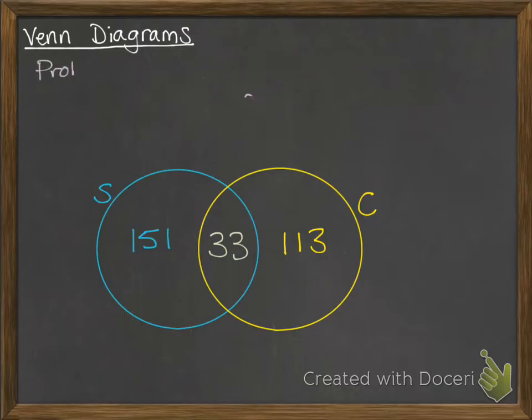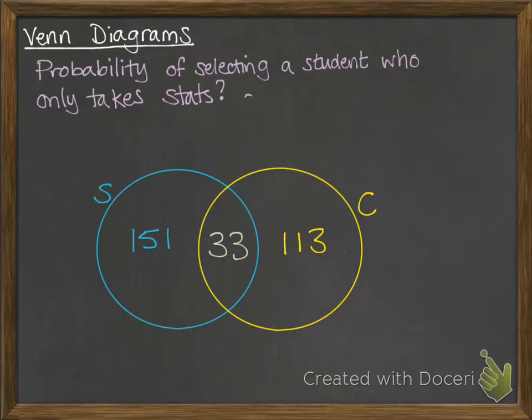What about if we asked, what's the probability of selecting a student who only takes stats? So we want the probability of picking somebody out of this group of 297 students that is in that blue section and not in the yellow. So that dash on the C means not in there. So we want the probability of S intersection with C dash.